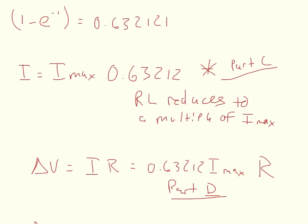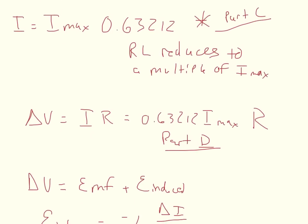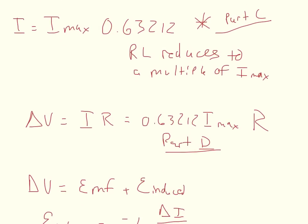And then the last part it asks, it could actually be done two ways. So it asks to find the voltage across the inductor after one time constant. So we found the voltage across the resistor at some time constant. And we also know what the EMF is. And so you could set up the equation where the change in voltage across the inductor is equal to the EMF voltage minus, or plus the induced voltage.